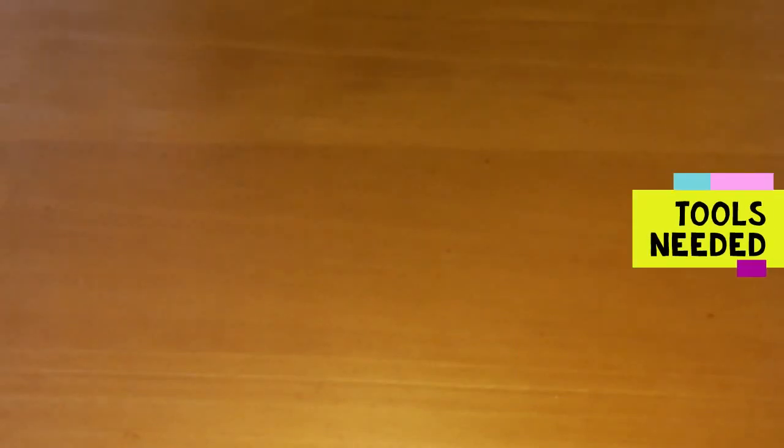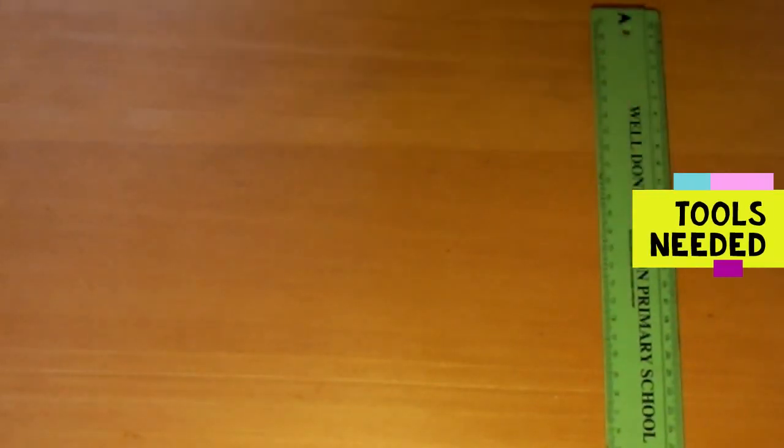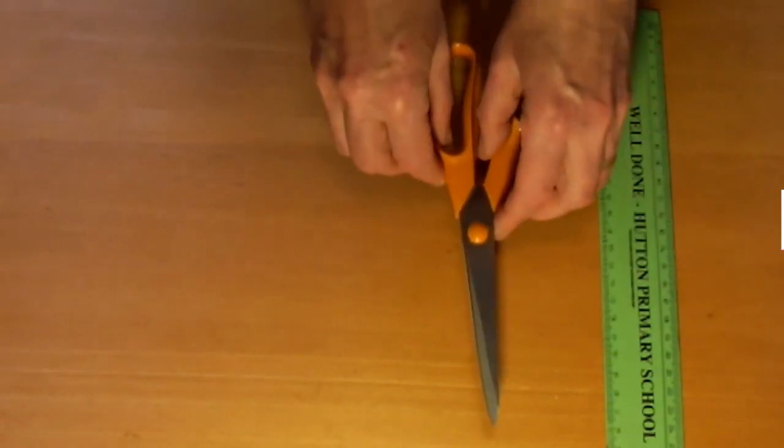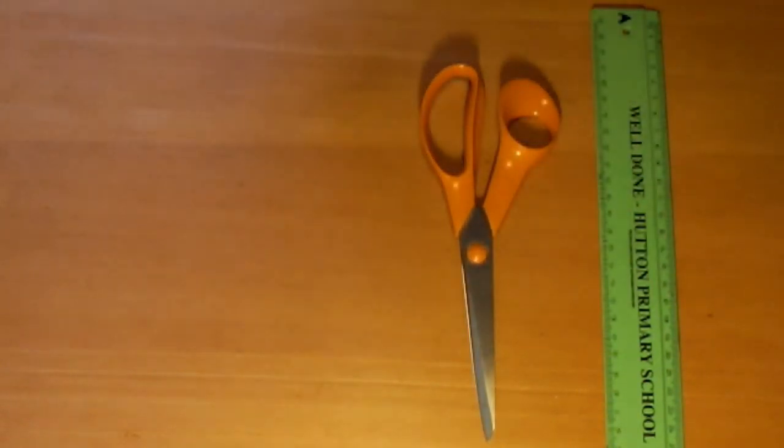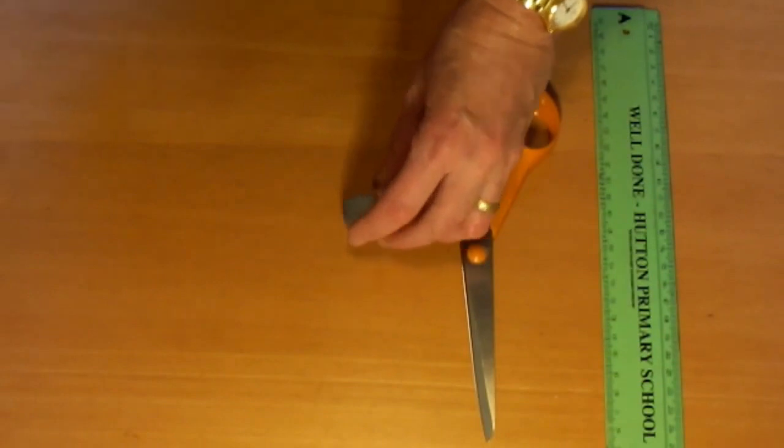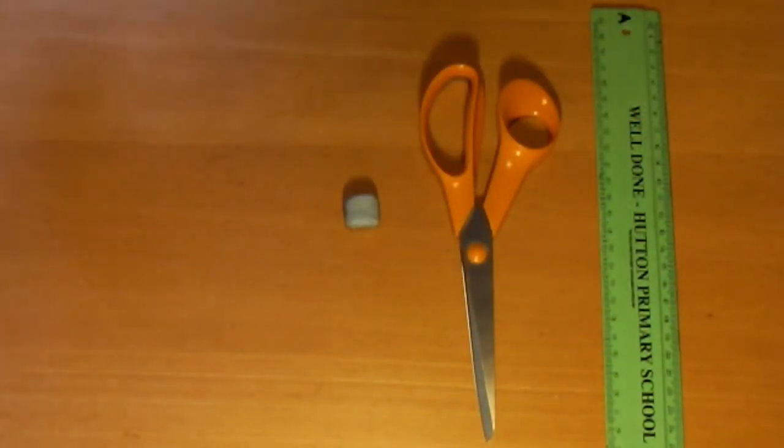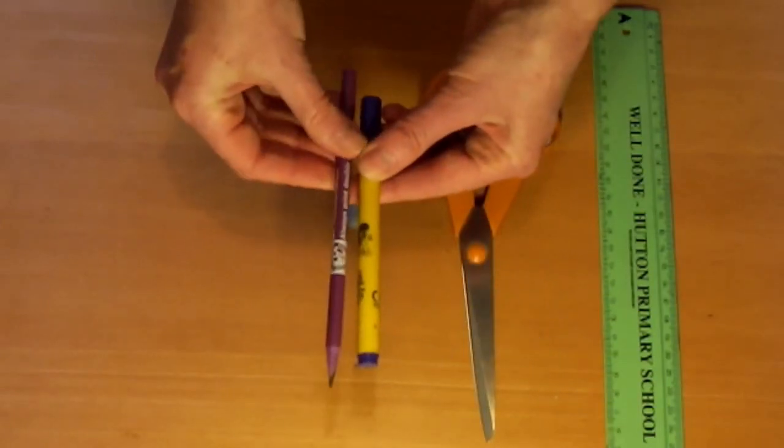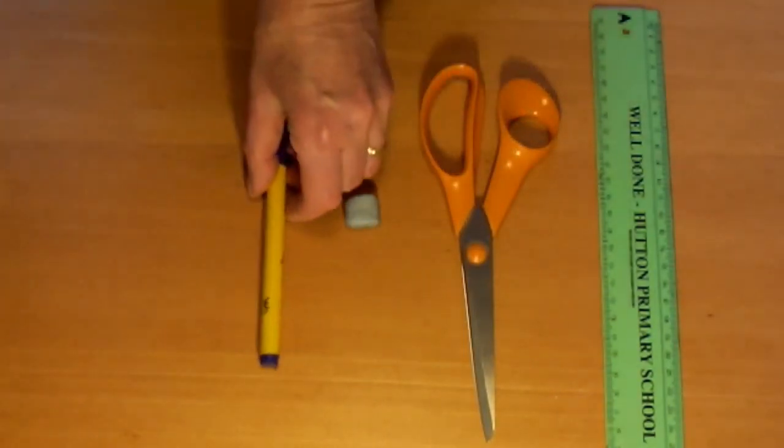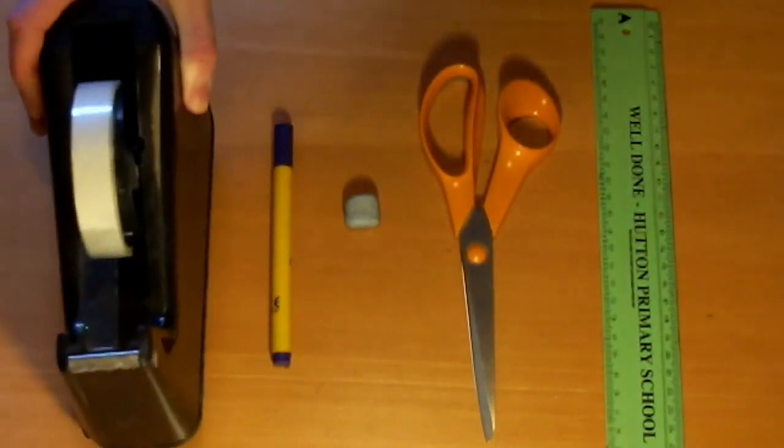You'll also need a ruler, a pair of big scissors, some blue tack or modeling clay or play-doh would do, a round felt tip pen that's got to be bigger diameter than the pencil, and some sellotape.